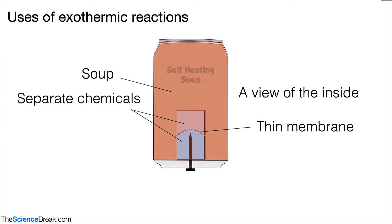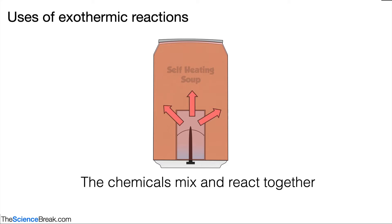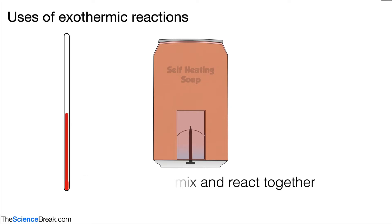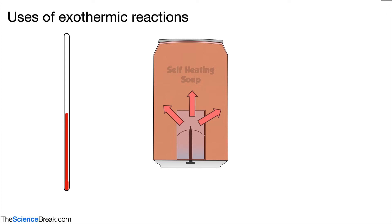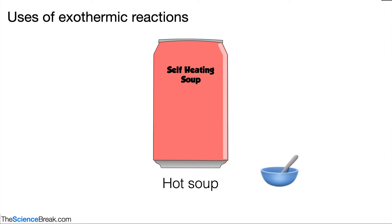But when we push the button underneath, it makes a hole in the membrane and allows those chemicals to mix. Those chemicals react together — they've been chosen specially because they cause an exothermic reaction. So heat energy is transferred from the chemicals to the soup, and you would see the temperature of the soup or coffee go up. No external heating required, and then you end up with a nice warm can of soup.